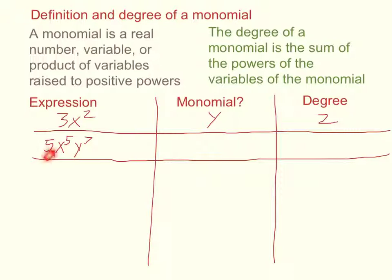If we look at something like this, we have a real number and two different variables raised to two different powers. That is still going to be a monomial. And notice in the definition of degree, it's the sum of the powers of the variables. So x is raised to the 5th, y is raised to the 7th, so the degree is 5 plus 7, which is 12. The second expression is a 12th degree monomial.